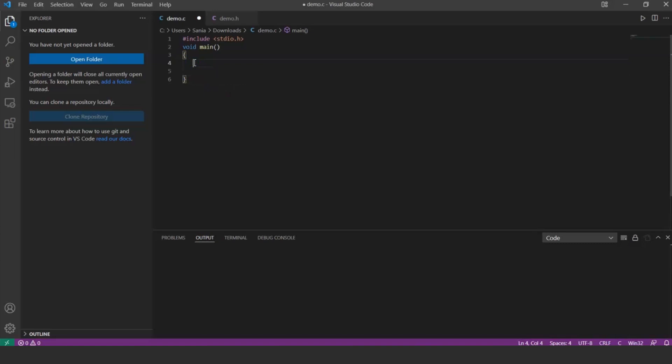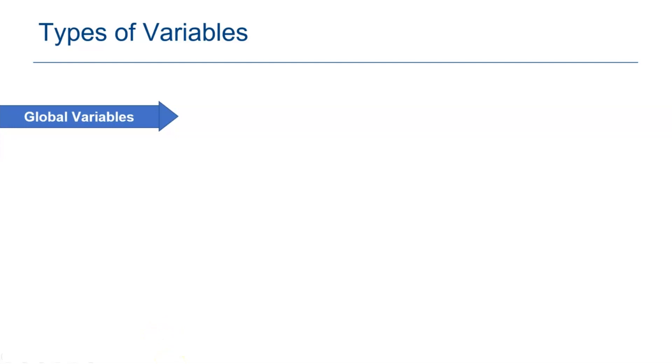Let's try to execute a simple program using local variables in VS Code editor. Inside the function, let's declare and initialize the local variable: int a equals 5, and then the printf function to print the value. Here, the value is printed successfully using local variable.